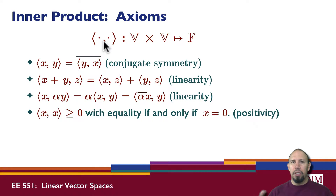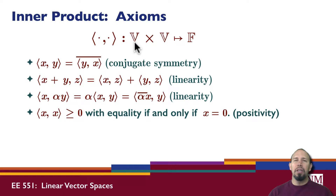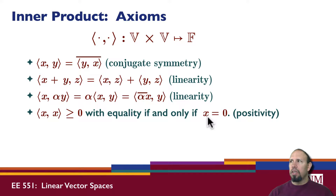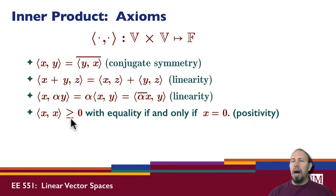The inner product is a function that takes two inputs and gives a single output, and these must satisfy the defining properties. For any vector space there are an infinite number of inner products. The last property is positivity: the inner product of anything with itself is greater than or equal to zero, and equals zero if and only if x itself is zero.